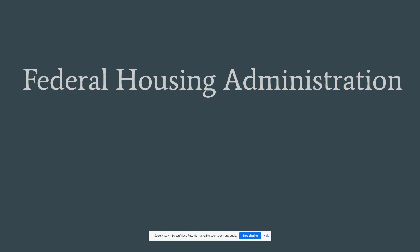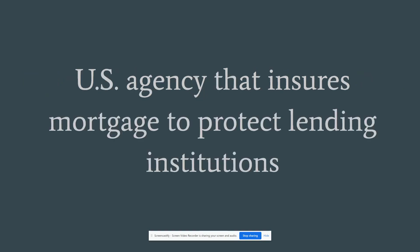Federal Housing Administration — the FHA. They're a U.S. agency that insures mortgages to protect lending institutions. On a conventional loan you have PMI — private mortgage insurance — because private lenders are giving the money. When you have an FHA-insured loan, you pay MIP, or mortgage insurance premium. You pay an upfront portion and then an annual amount broken down monthly. For the test, you just need that broad stroke — you don't need much more than that.